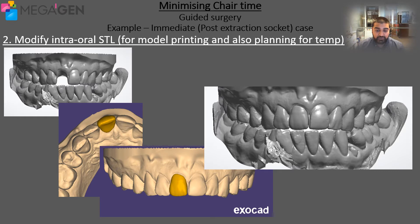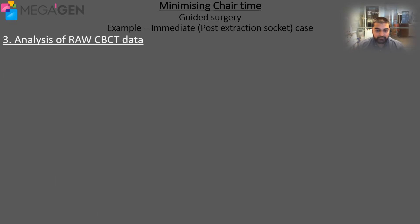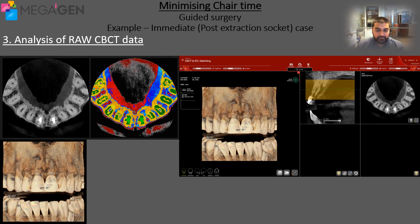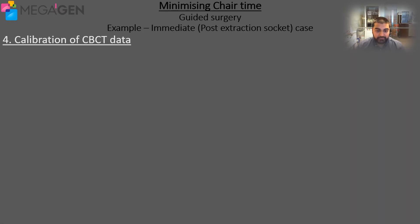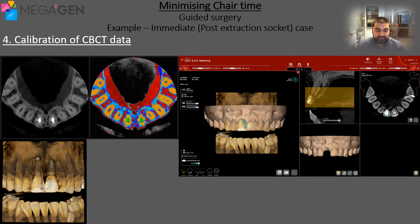Another thing that we need to do is to design a wax up to match the aesthetics of what we are trying to achieve. Now that we have modified the digital model, we can then move on to calibrating the Hounsfield units within the CBCT. This is the CBCT before calibration and this is the CBCT after calibration. You can see that I have also merged the digital model and the wax up to the CBCT in the software.